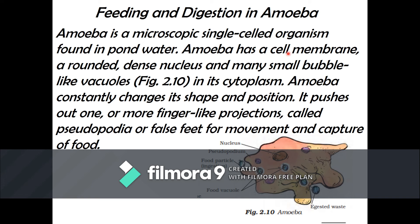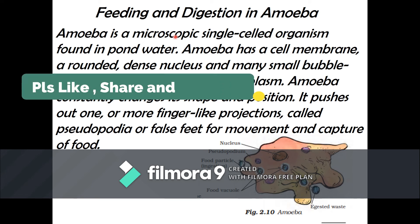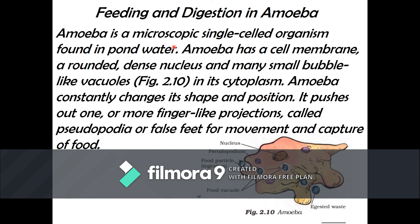Amoeba is a single-celled organism that cannot be seen without a microscope. It is found in pond water. It has a cell membrane, a dense nucleus, and many small vacuoles in its cytoplasm. The specialty of amoeba is that it can change its shape and position. It pushes out one or more finger-like projections called pseudopodia, also known as false feet, which help in movement as well as in the capture of food.